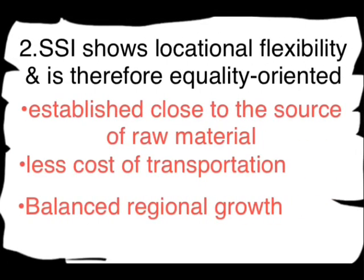The second feature: SSIs show locational flexibility and are therefore equality-oriented. Large scale industries like Tata and Birla establish their industrial units where raw materials are available, meaning they need to carefully check the location to reduce transportation costs. But small scale industries do not need any particular industrial area. Small scale industries are not highly polluting, so they can be established close to the source of raw materials.